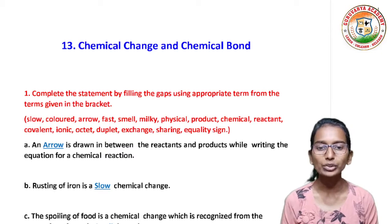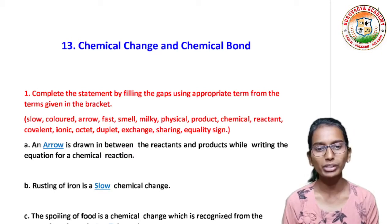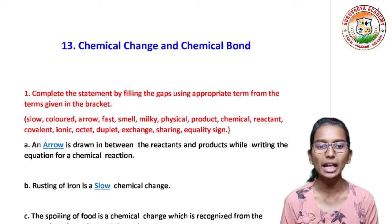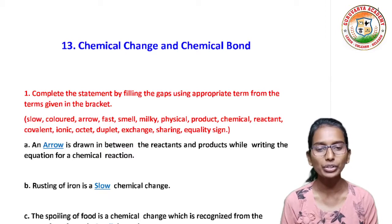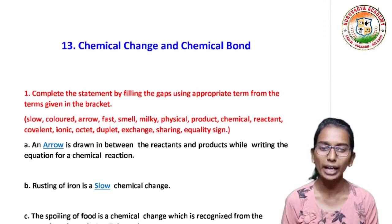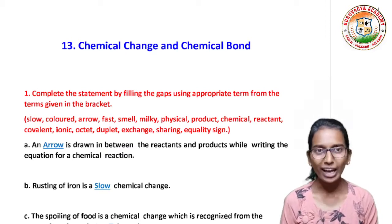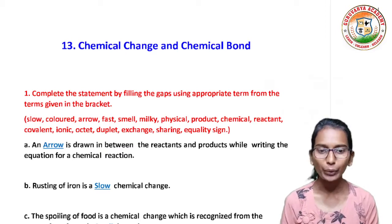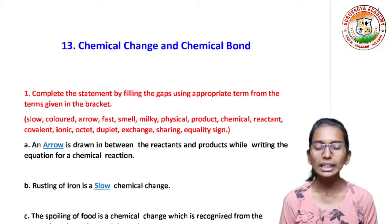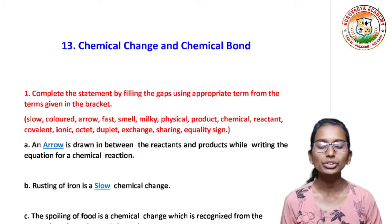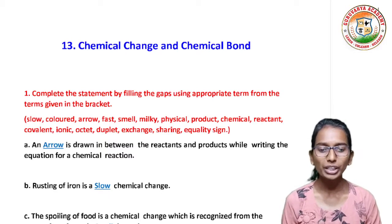First blank: a dash is drawn in between the reactants and products while writing the equation for a chemical reaction. Answer: Arrow. Second blank: rusting of iron is a dash chemical change. Answer: Slow.